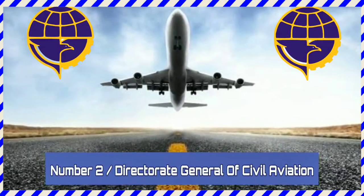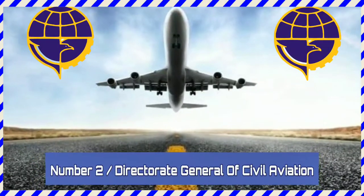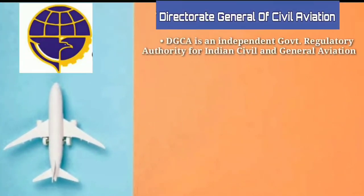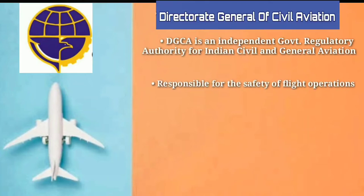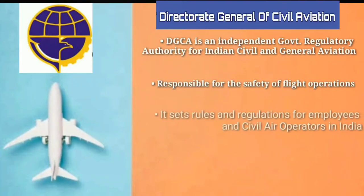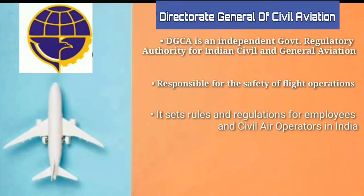Number two is Directorate General of Civil Aviation. In short, DGCA is an independent government regulatory authority for Indian civil aviation and general aviation. DGCA is responsible for the safety of flight operations. It sets rules on different categories of jobs in civil aviation like pilots, engineers, cabin crews, ground staffs, and employees of air traffic control services.